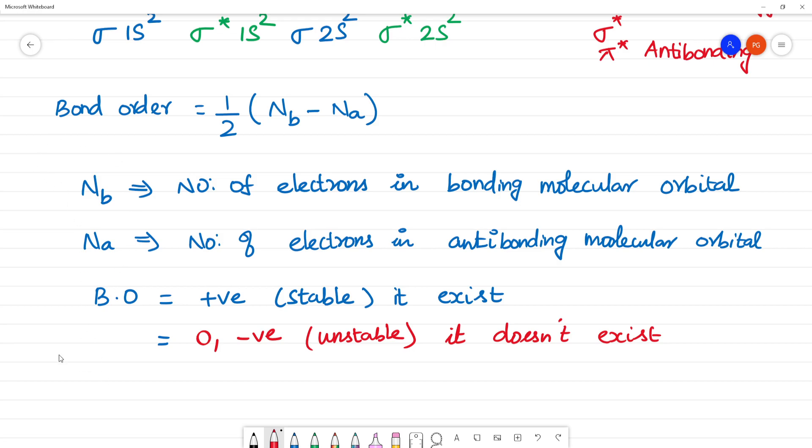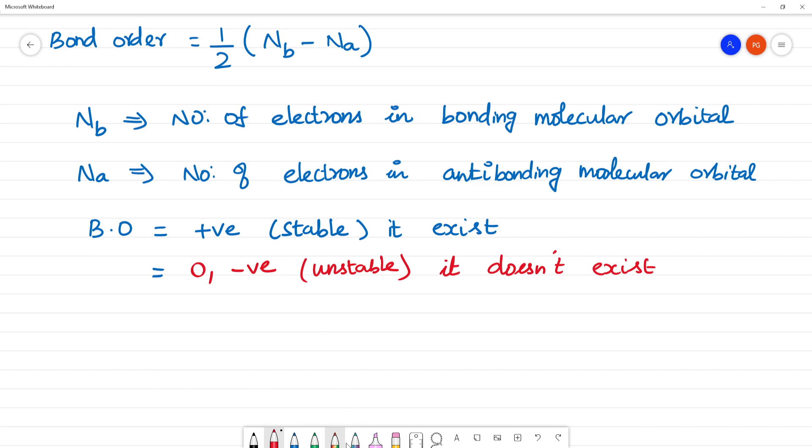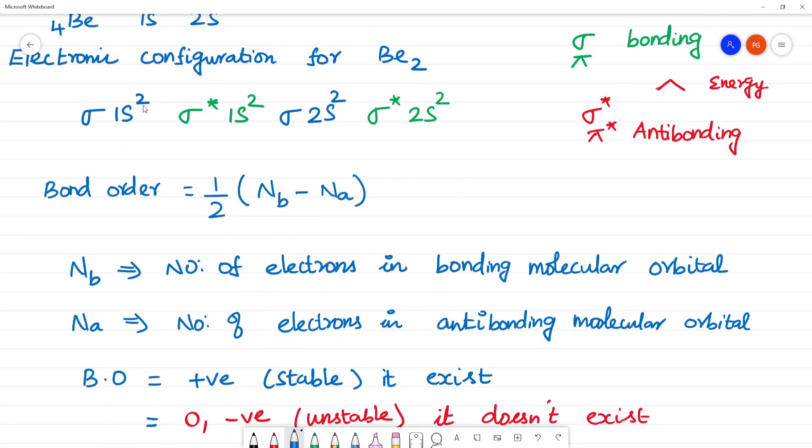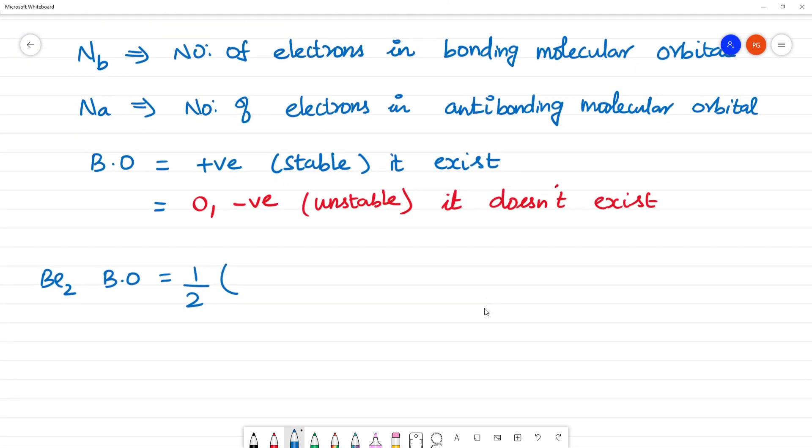Now bond order for Be₂. Calculate bond order for beryllium-2. Half into number of electrons in the bonding orbital. Bonding is sigma 2, sigma 4. Antibonding is 2 plus 2, 4. So 4 minus 4 is 0. ½ into 0 is 0. The bond order is 0.